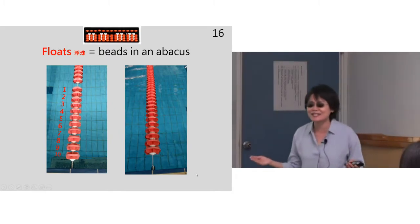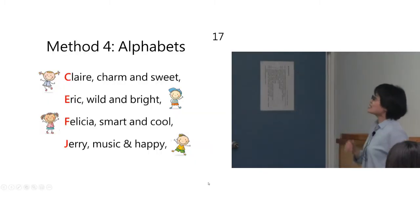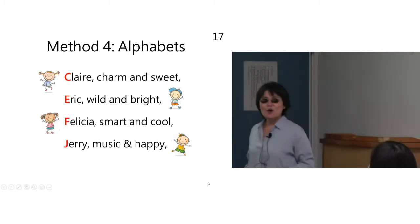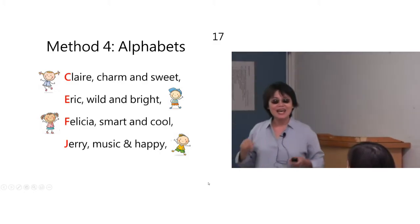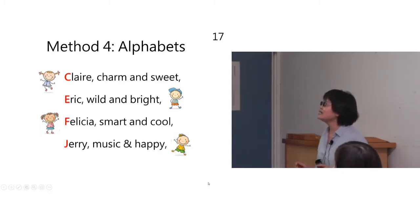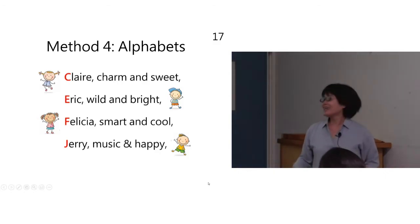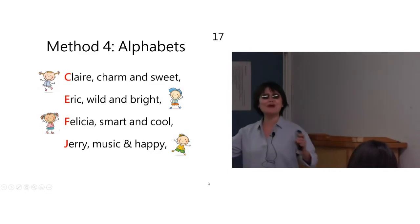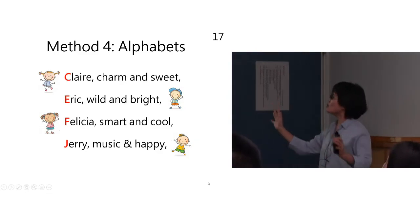Method four: alphabets. You know some people recommend this. While swimming you think of one specific alphabet in your mind. You can start with A. And this is what I did: in my first lap I will have something like 'Claire, charm and sweet.' In the second lap, 'Eric, wild and bright.' In the third lap, 'Felicia, smart and cool.' Fourth lap, 'Jerry, music and happy.'